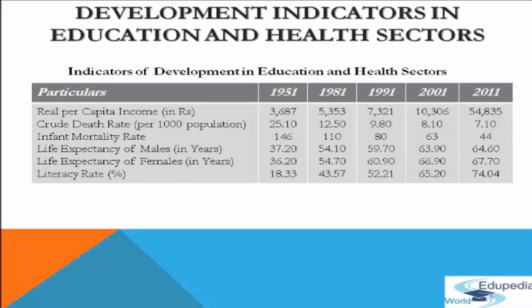The analysis of the indicators mentioned in the table shows that human capital growth, as shown by improvement in the education and health sectors in developing countries, has been faster. But the growth of per capita real income has not been that fast.